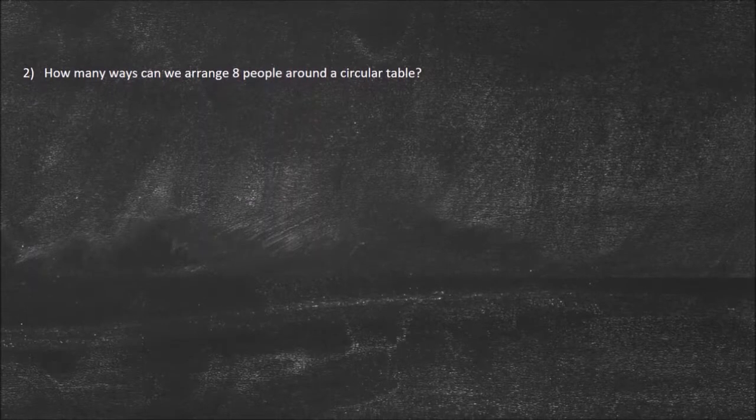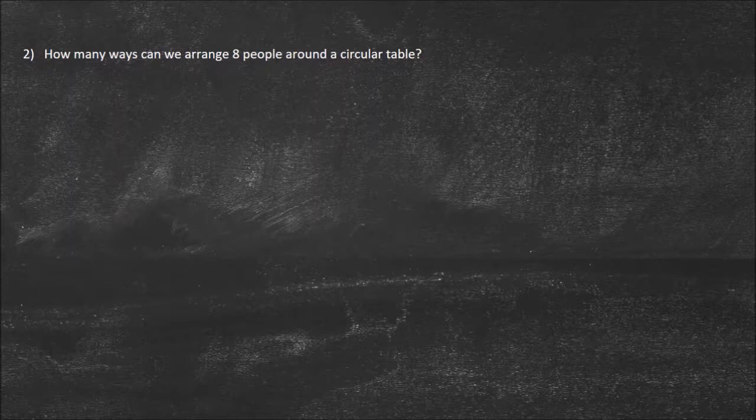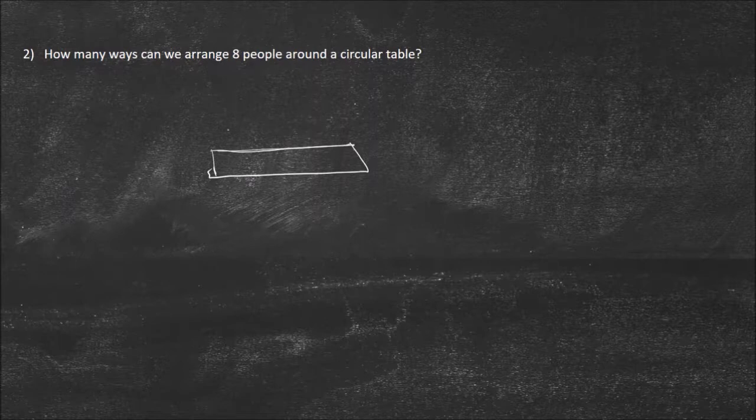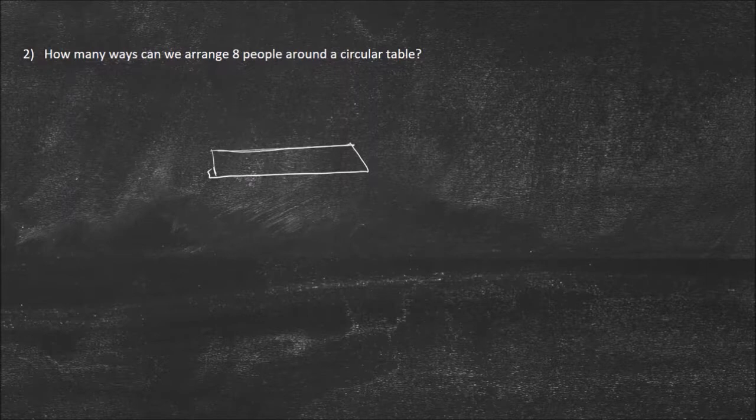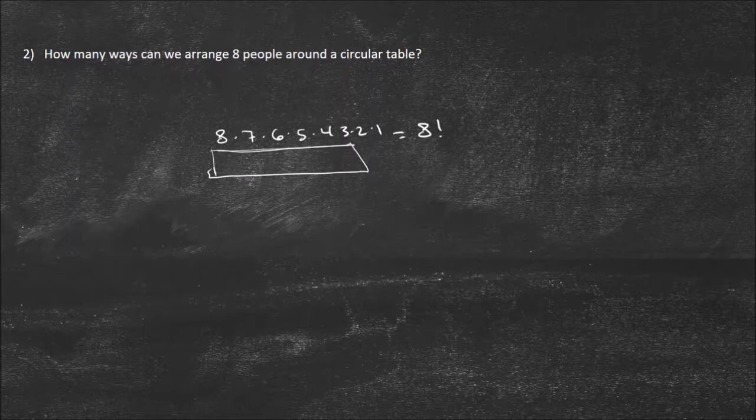Let's look at another one. How many ways can we arrange eight people around a circular table? Let's think about a table normally. If this was a regular table, how many ways can I organize eight people? That's pretty easy, right? It's eight factorial, because the first person can sit in eight different spots, and the second only has seven to choose from, then six, five, four, three, two, one. So it's eight factorial ways.